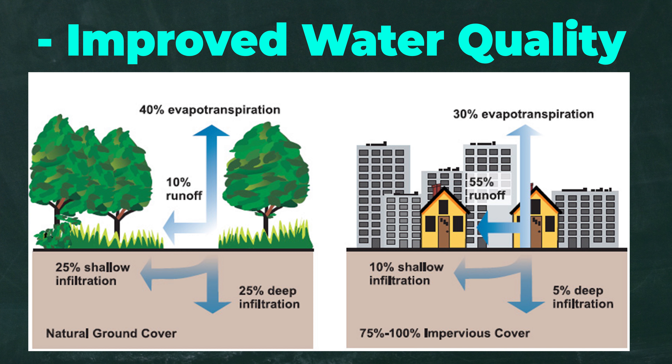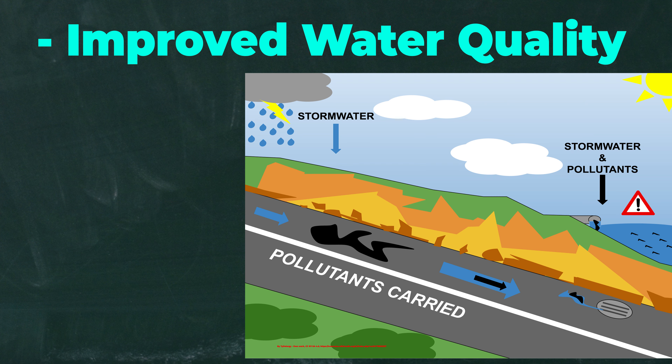Preserving open lands and creating parkland preserves natural processes of infiltration and limits imperviousness, both of which are intimately linked to storm water management and water quality.